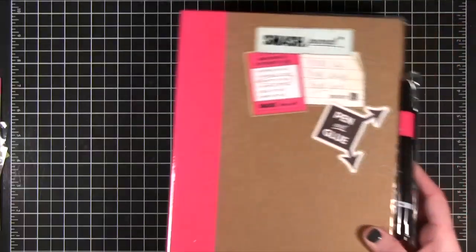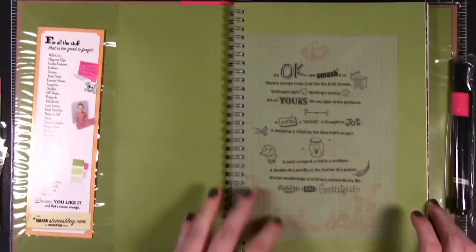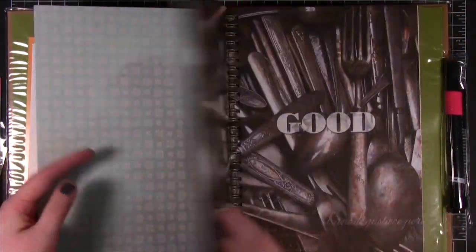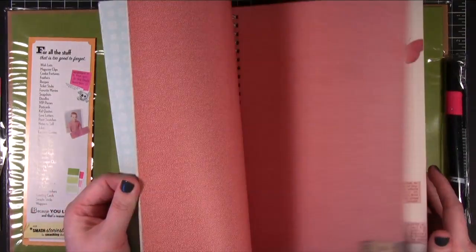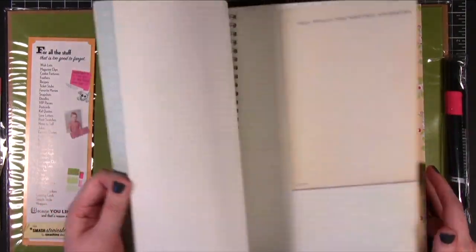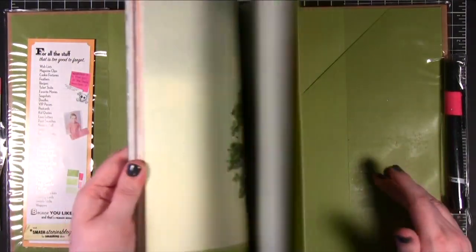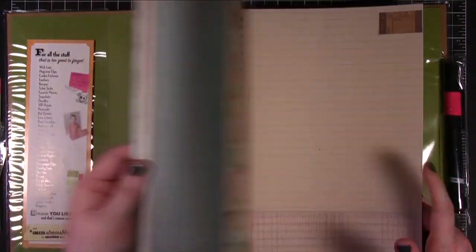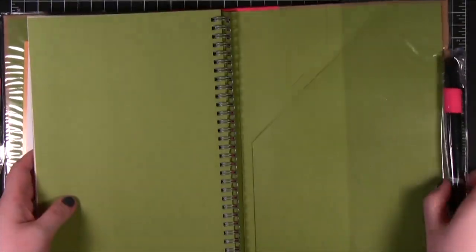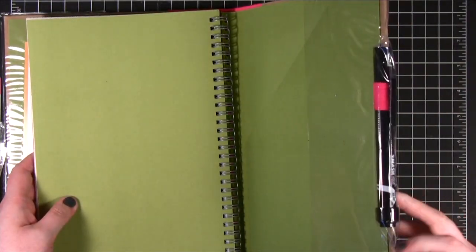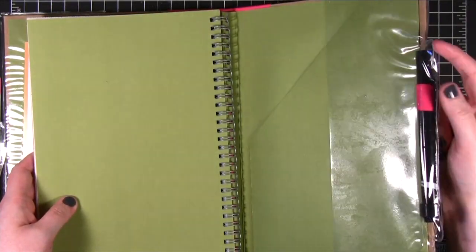Okay, so these Smash Journals are actually really cool. They have different pages inside. I'll put a link to the Smash Journal video, but really fun designs, just little things you can do. And then it comes with this pen and on one end it has a glue stick and on the other is a marker.